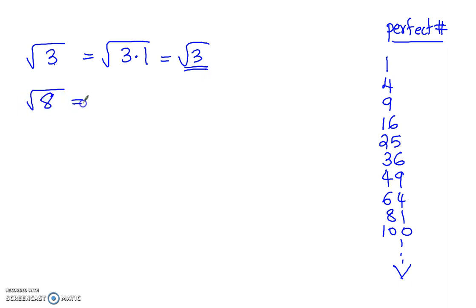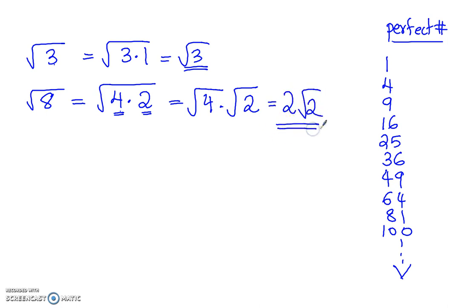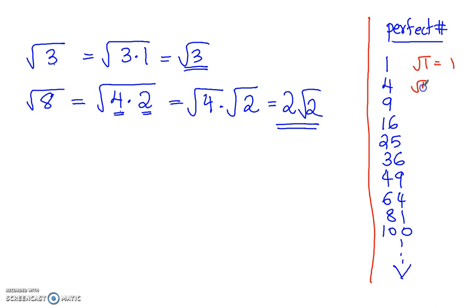But if you had another radical like radical 8, 8 can be factored as 4 times 2, where 4 is a perfect number. So if you can factor the number in our radical as the product of a perfect number and another number, then you have to go ahead and simplify it. This becomes square root of 4 times square root of 2, and since square root of 4 is 2, we have 2 radical 2. Perfect numbers are numbers that have a square root: square root of 1 is 1, square root of 4 is 2, square root of 9 is 3, and so on.